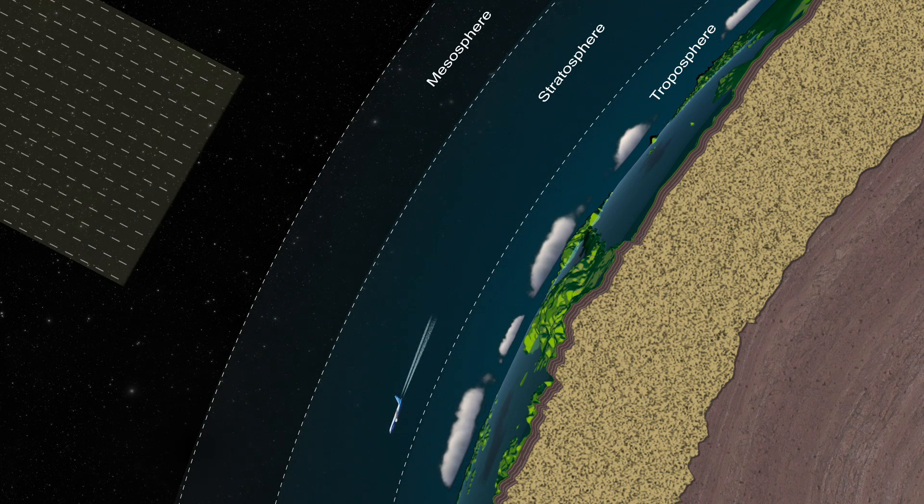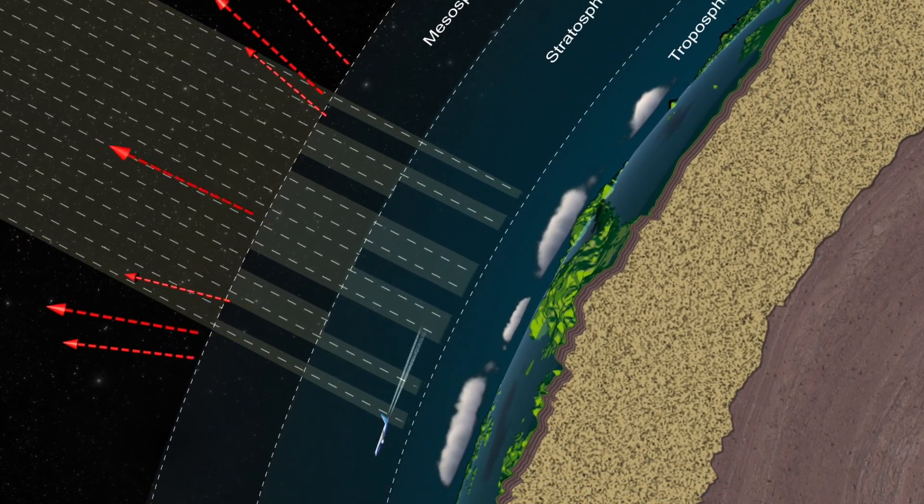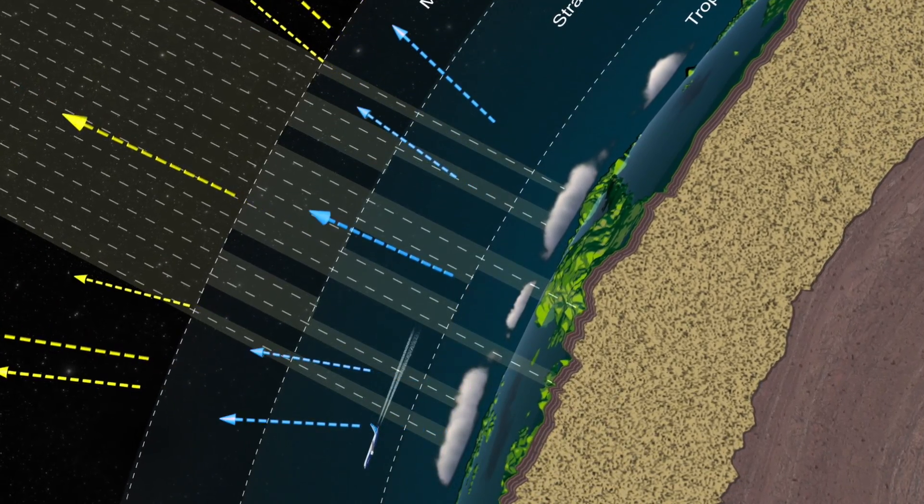Clouds affect how much of the sun's energy reaches Earth, which can be difficult to calculate without knowing how each cloud blocks, absorbs, or transmits light.